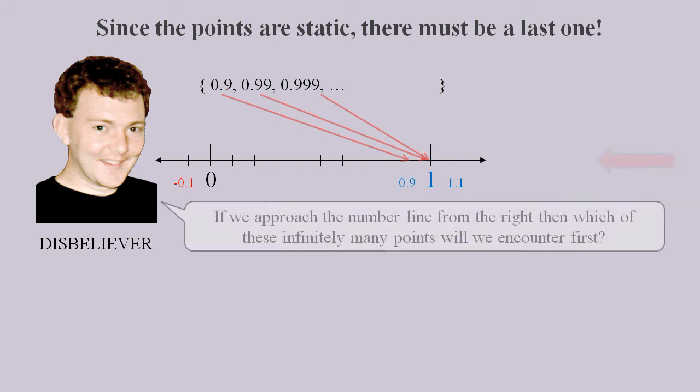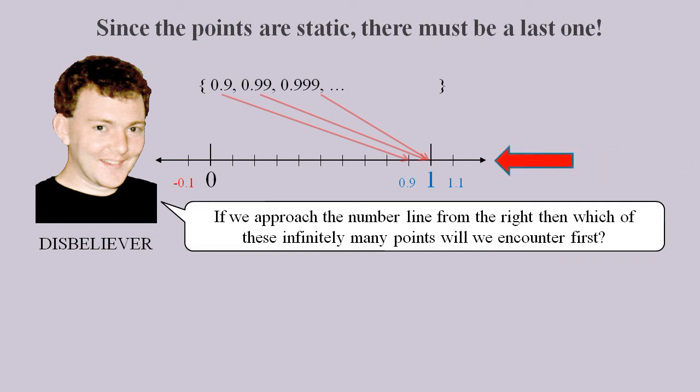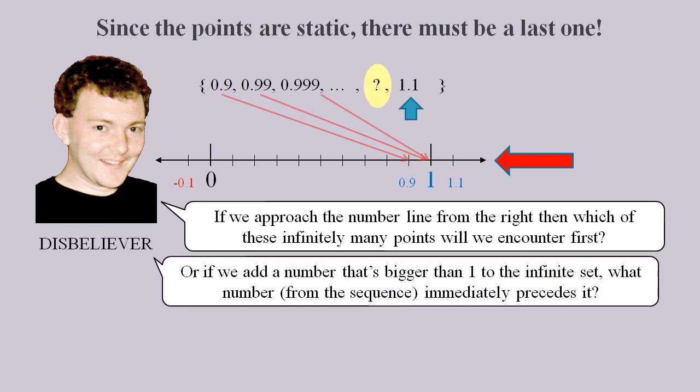If we approach the number line from the right, then which of these static points will we encounter first? Or, if we think of these points in an ordered infinite set, and we add a number that's bigger than 1 to this set, what number will immediately precede it?